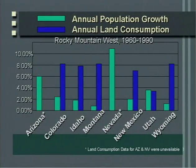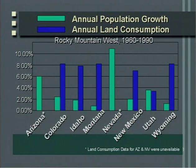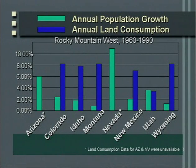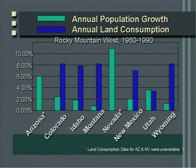I wanted to show you a figure of Western states showing annual population growth and annual percent land loss — land going out of primarily ranch lands and other agriculture into residential development. In Colorado, the annual rate of population increase is just under 3%, but the rate of land loss is just over 8%. That seemingly doesn't make sense; you would think it would be more or less a one-to-one ratio.